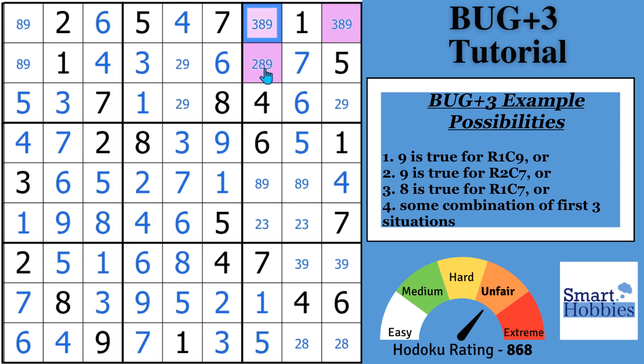The fourth condition is any of those situations, any combination of those situations can be true. So you actually have four situations to consider. A 9 here, a 9 here, an 8 here, and then some kind of combination of these three. It could be all three are true, which is not likely, since the 9s would have to be in both those cells. Or like 8 and 9 would be true in two of the cells, like these two cells. So you have to consider that.